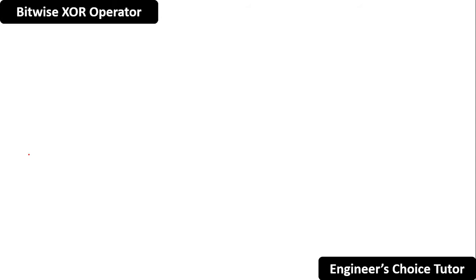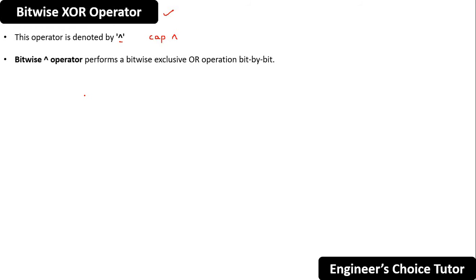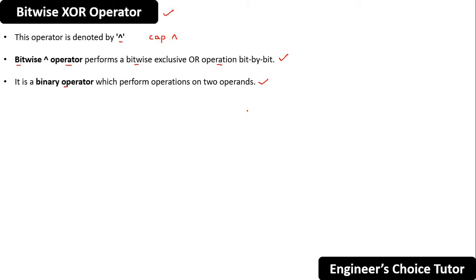In today's lecture we will discuss the bitwise exclusive OR operator. The symbol for this operator is the caret (^) symbol. This bitwise XOR operator performs a bitwise exclusive OR operation bit by bit. It is basically a binary operator which performs operations on two operands. Now let's see the truth table for this bitwise exclusive OR operator.